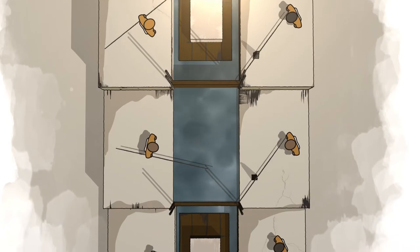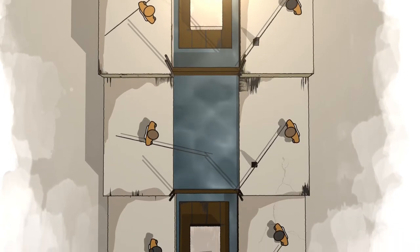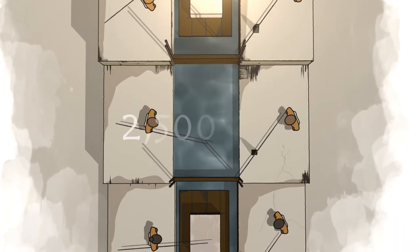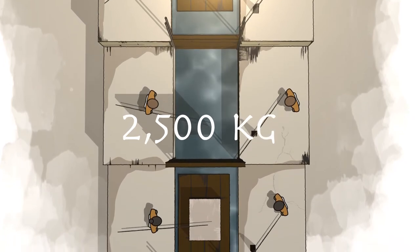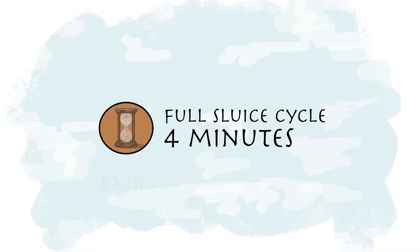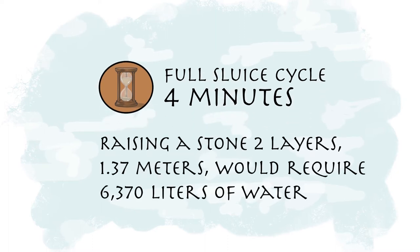Two workers are required to move the barge from one sluice to the next. The levers work on the same principle as a shadoof. The average weight of the stone being transported was 2,500 kilograms. The full cycle of the sluice takes four minutes. Raising a stone two layers higher on the pyramid, 1.37 meters, would require 6,370 liters of water.